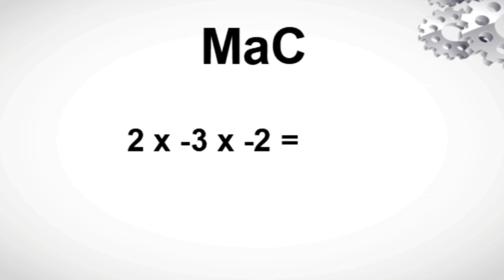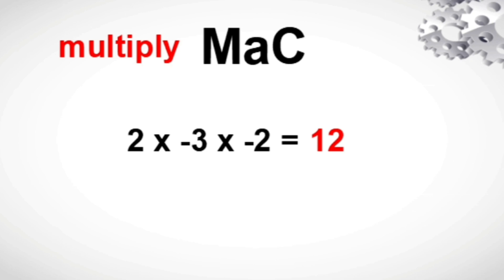Now we have positive 2 times negative 2 times positive 2. First, multiply. Next, count the number of negative integers in the factors. We have negative 2, which is an even number of negative integers in our factors. That means our product must be a positive number.